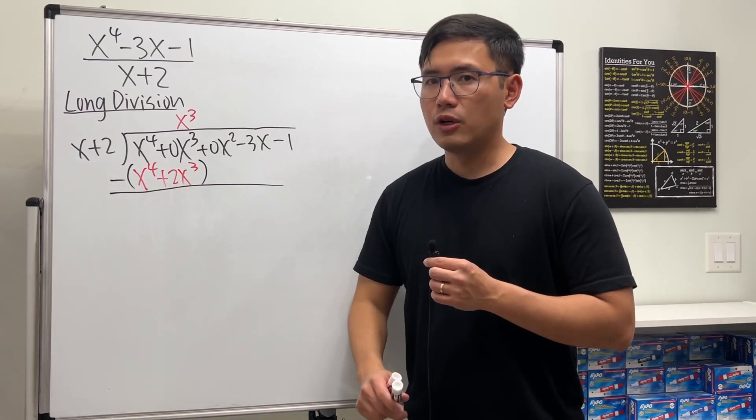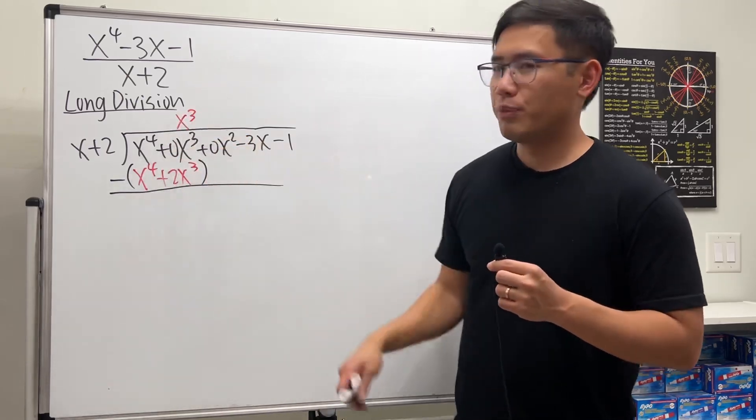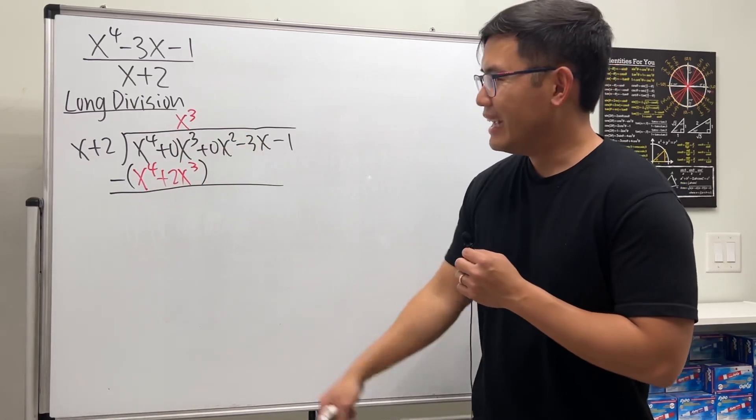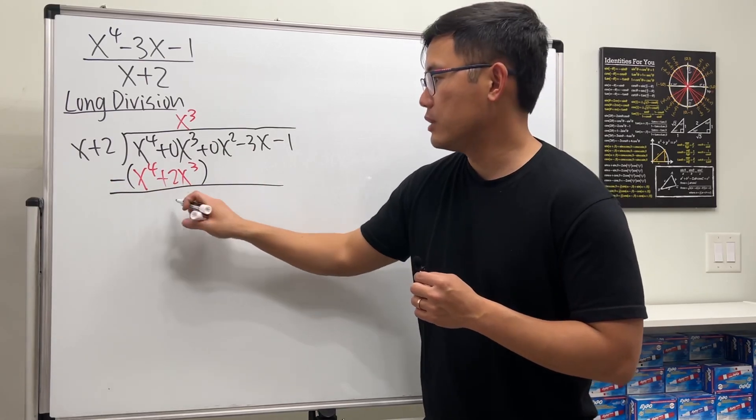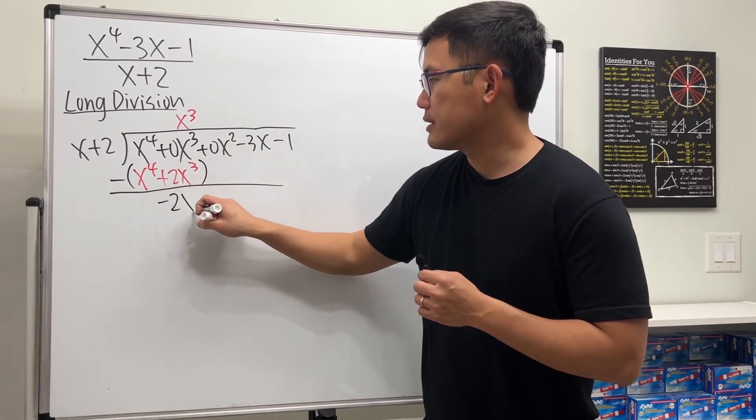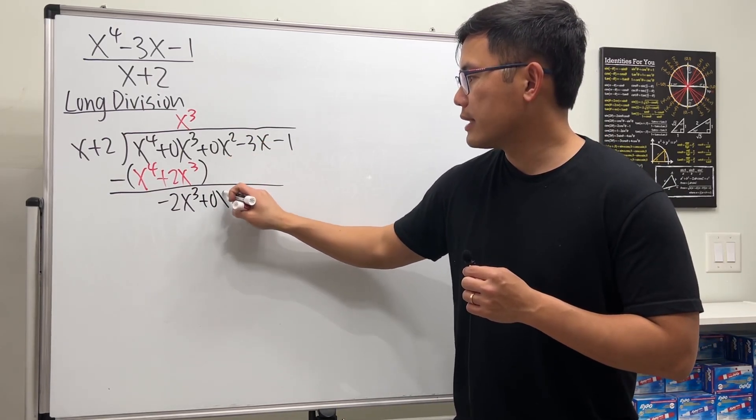Literally done like this. Now for the first term, they will cancel. That's good. They always have to cancel. Otherwise, you will have to pick something else because it was wrong. So now for this, 0 minus 2, right? So that's negative 2. And then, of course, the x to the third power term. Continue. Bring this down. So we have plus 0x squared.